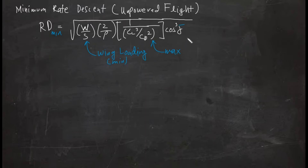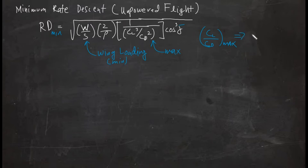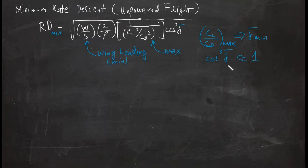If your gamma is already minimum — remember in the first video we solved for the maximum CL/CD, which in turn gives the minimum glide path angle — then if you have CL/CD max you also obtain the minimum glide path angle. So if gamma bar is minimum, then cosine³γ̄ will be almost equal to 1.